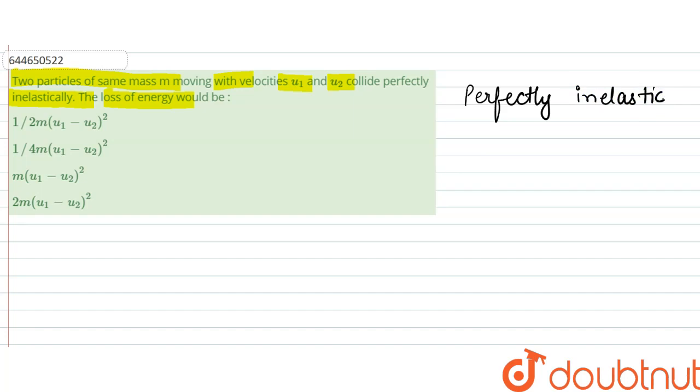During a perfectly inelastic collision, delta kinetic energy is given by half into m1 m2 by m1 plus m2 into u1 minus u2 square, into 1 minus e. So for perfectly inelastic, e